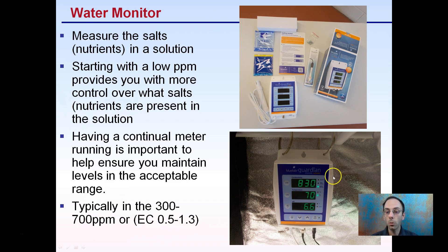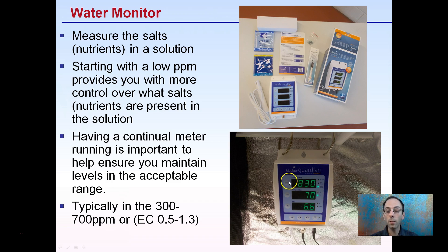The BlueLab Guardian Monitor shown here measures not only parts per million, but also temperature and pH. This gives a quick look at where you are. The reading here is slightly on the high side — I just added nutrients and was waiting for it to balance out, maybe just over-added a little bit. But temperature looks good and pH is right in that slightly acidic range.